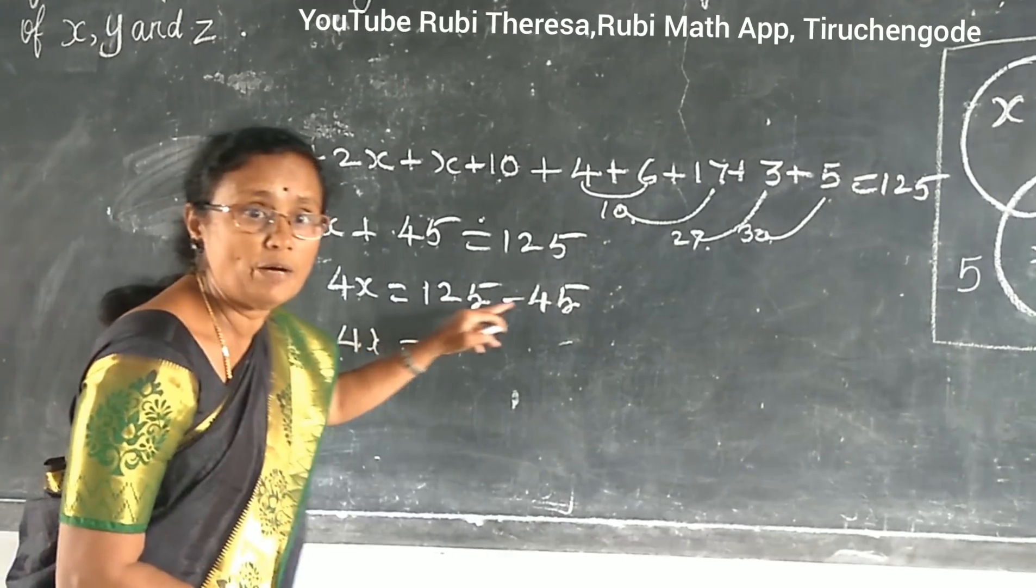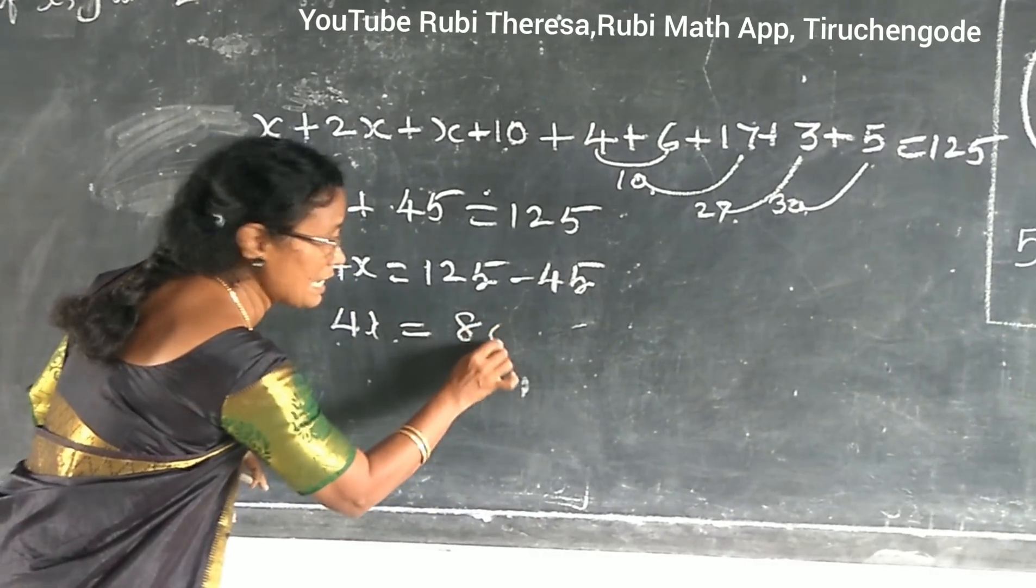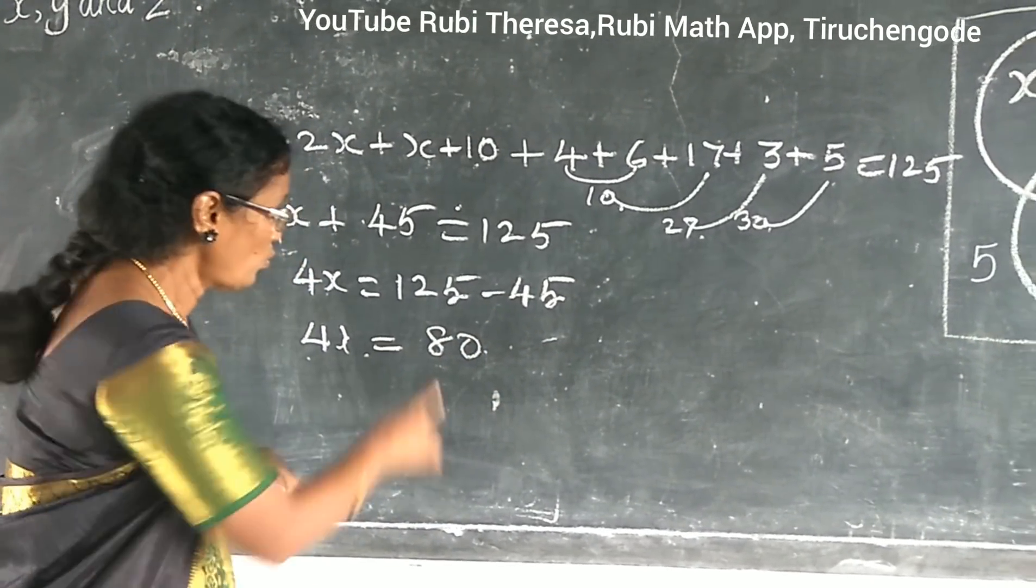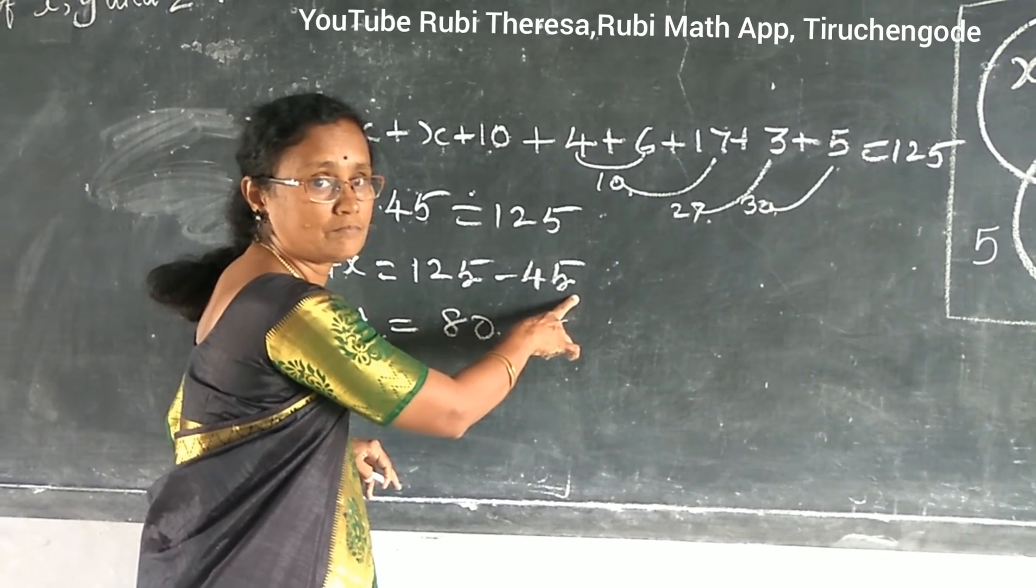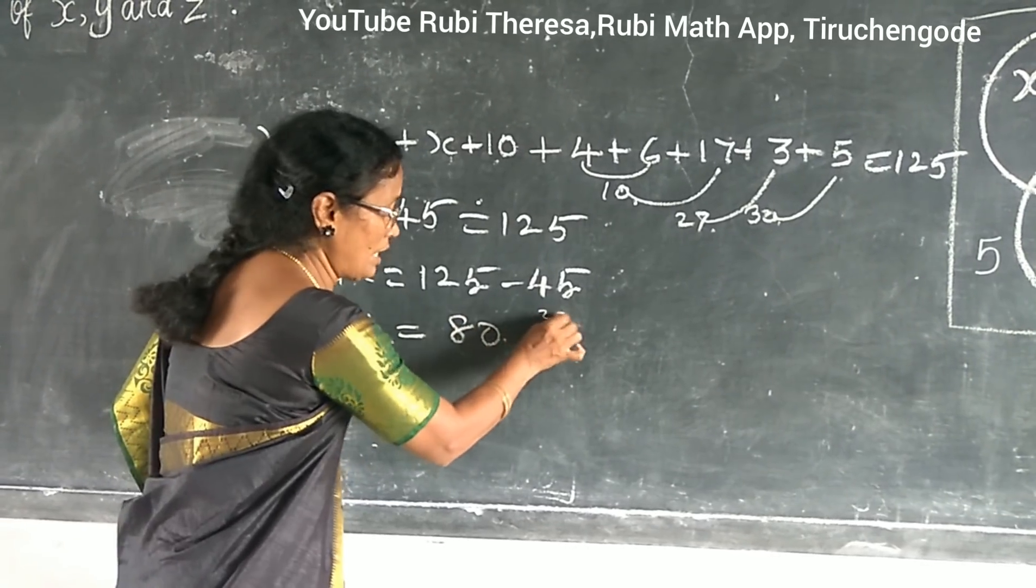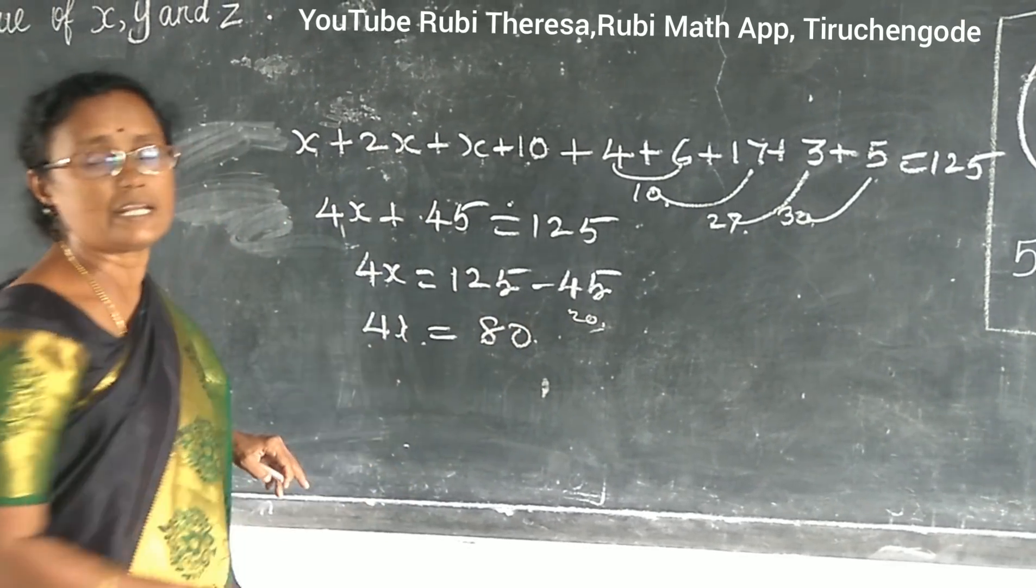So 4X equal to how much? 80. 125 minus 45. So 25. Again it is 20. 100 minus 20. 80.